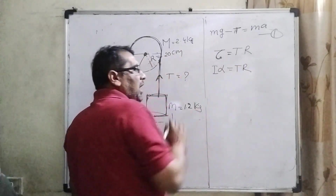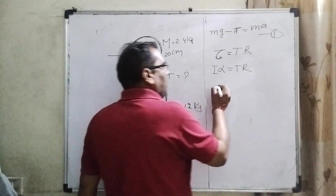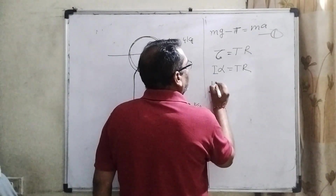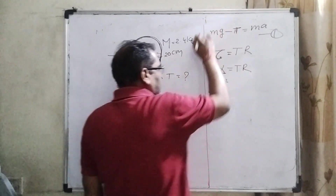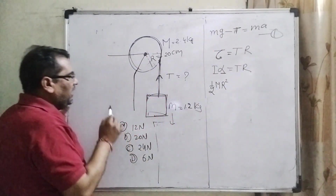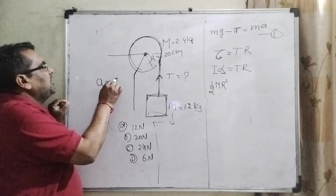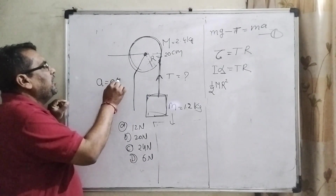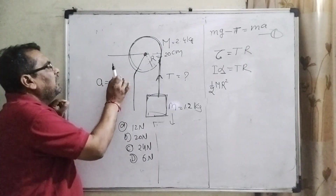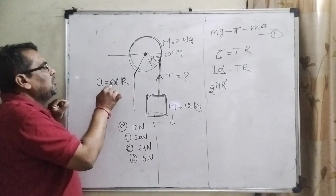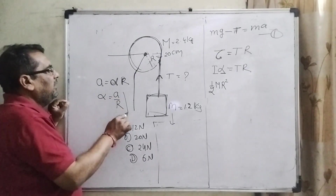Now, I means the moment of inertia of the disc, which is one-half M R squared. And for alpha, using the relation that linear acceleration equals angular acceleration into R, we get alpha equals a divided by R. So in place of alpha we substitute a over R.